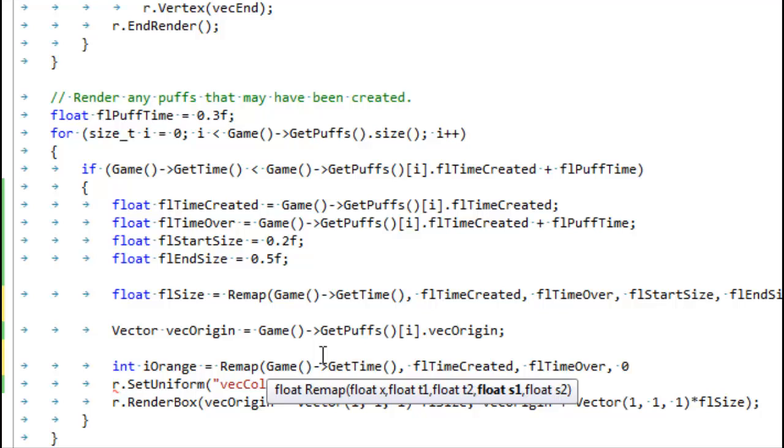But instead of specifying a size as an output, we're going to specify a color. So we're going to start with zero, meaning no orange. And then the maximum orange that we can get is 255. 255 is the maximum color value usually when you're talking about game engines. So then I'll pass that orange right in here for the color. Let's crank this bad boy up.